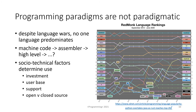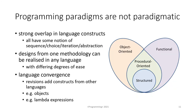I reckon this is partly because socio-technical factors determine use — in particular how much investment someone has in a language, what the user base is, how much support there is, and increasingly open versus closed source. More fundamentally, there are very strong overlaps in language constructs. All languages have some notion of sequence, choice, iteration, and abstraction. Designs from any one methodology can be realized in any language, with differing degrees of ease. And every time languages are revised they seem to accrete constructs from other languages — we saw objects added to C, and recently lambda expressions added to Excel.